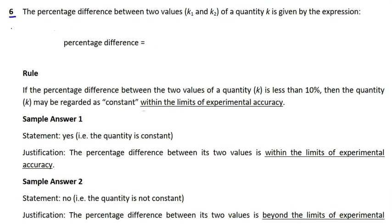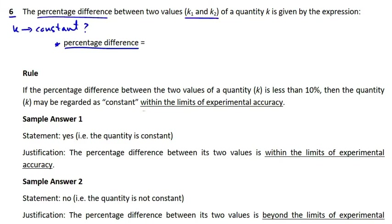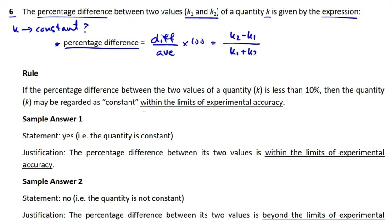The last rule is used to determine whether a quantity k may be regarded as constant. To determine this, we find the percentage difference between two values of the quantity. The percentage difference between two values k1 and k2 is given by: |k2 − k1| / ((k1 + k2) / 2) × 100.